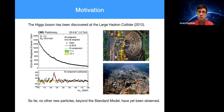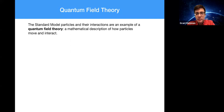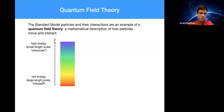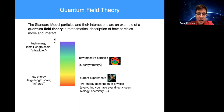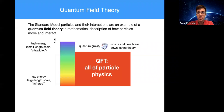The standard model particles and their interactions are an example of a quantum field theory — a mathematical description of how particles move and interact. If I draw an energy scale from low energies, long length scales — called the infrared — to high energy, small length scales — called the ultraviolet — current experiments like the LHC lie at intermediate scales. Below that is everything you've ever directly seen: biology, chemistry. Above are hopefully new massive particles, new forces, maybe supersymmetry, and above all that is quantum gravity. Everything in between is described by quantum field theory.